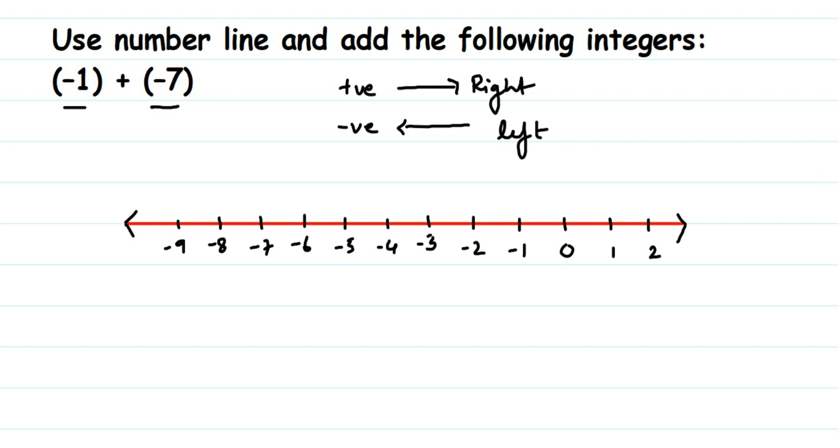So the first number is minus 1, which is here. This is the starting point. From here I have to add minus 7, so I have to go towards the left side on the number line.